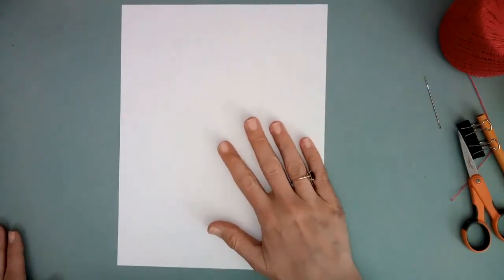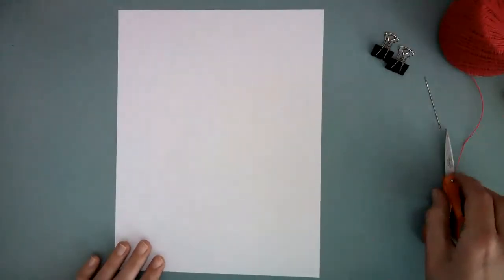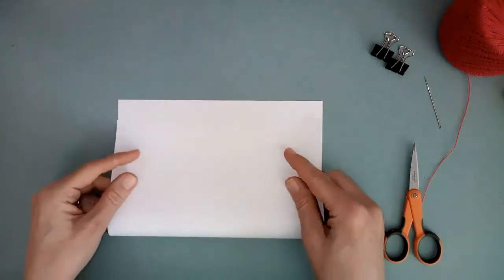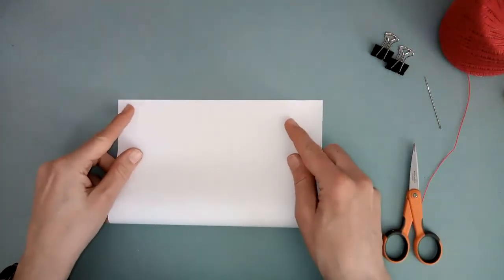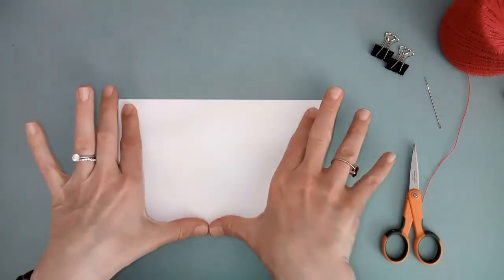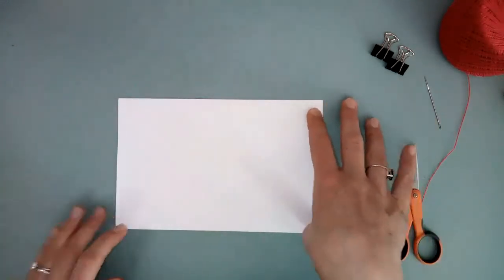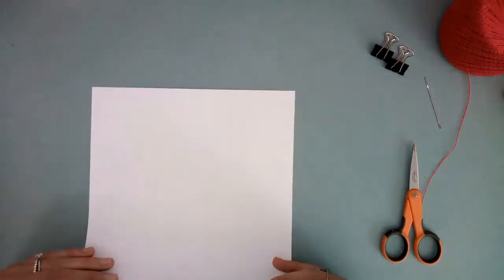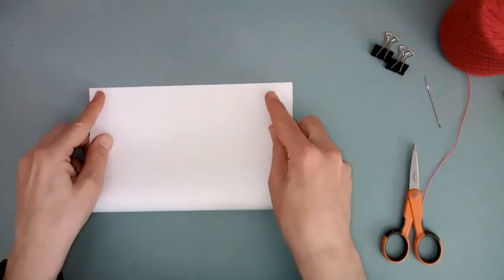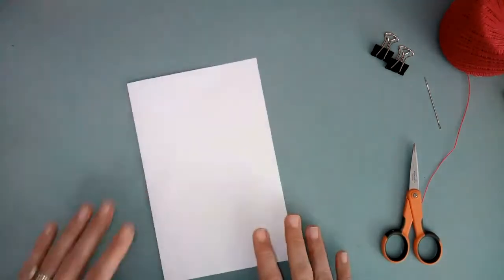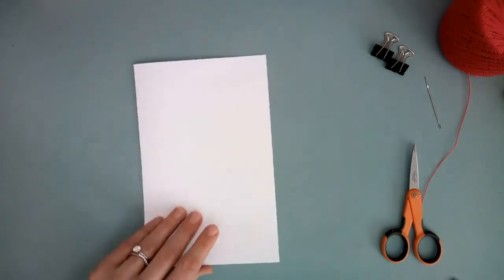All right, so first of all, once you've got your supplies gathered, I'd like you to take your paper vertically in front of you and fold it up. Each piece you'll fold individually. Line the corners up. I like to hold them down with my fingers and then crease with my thumb. So you'll do this for all five sheets, up to eight sheets of paper. Line it up and crease.